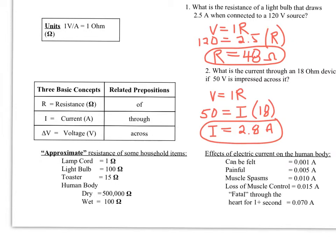So at the bottom of the page here, some typical resistances of household items. For example, a lamp cord is about 1 ohm, typically. A light bulb, 100 ohms. A toaster, 15 ohms. Human body, 500,000 ohms. You're actually going to measure the resistance of your body in class in a few days.